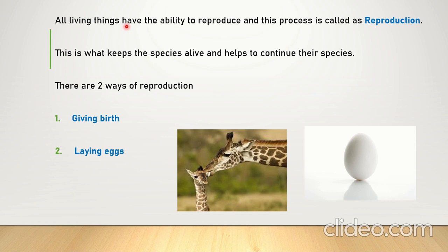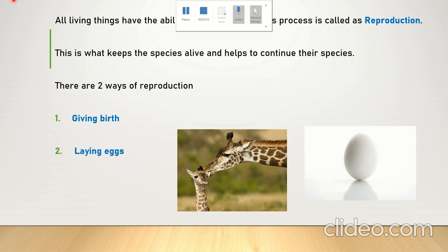Suppose, when life was first created, there was the first giraffe on the planet. If that giraffe didn't have the capability of reproducing, after it died there would be no more giraffes. That is the reason all living things have reproduction — to continue their species. Some species are becoming extinct, like dinosaurs due to the meteorite theory, and some animals are becoming endangered because humans are harming them.